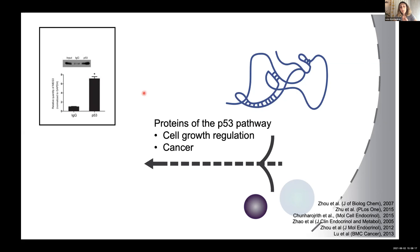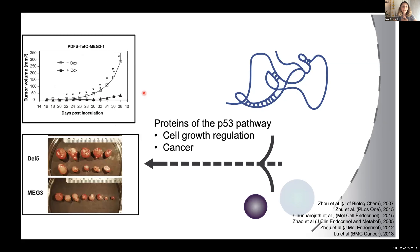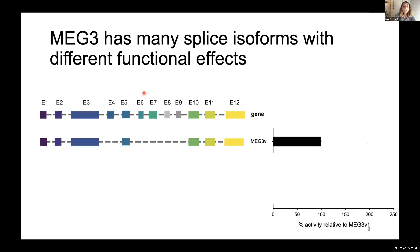The second class of proteins with which MEG3 has been connected is proteins belonging to the p53 pathway. Through this type of interaction, MEG3 acts as a tumor suppressor. This is the pathway that our lab has been mainly focusing on, and this is what I will be talking about when I characterize MEG3 functionally.